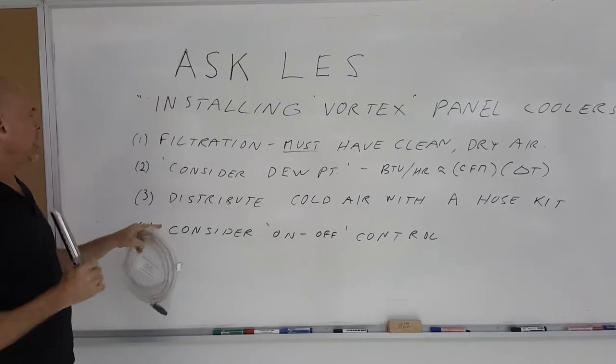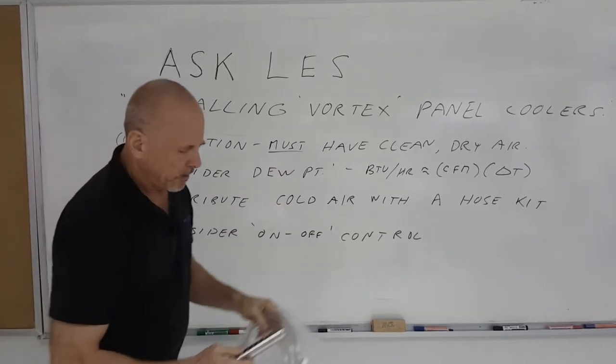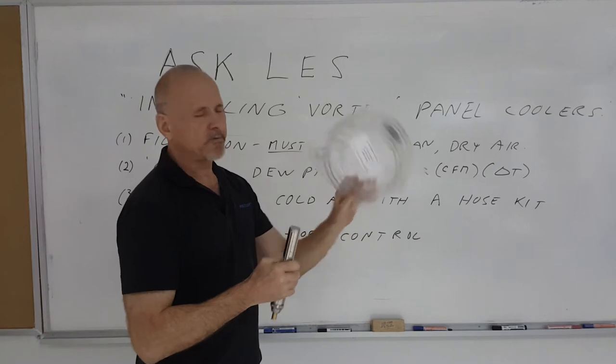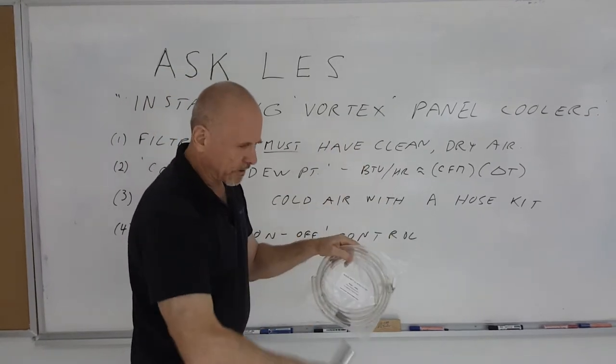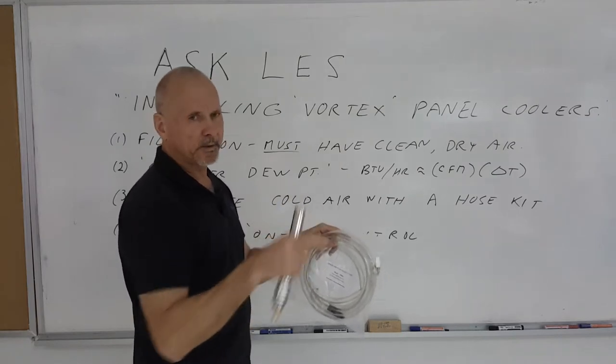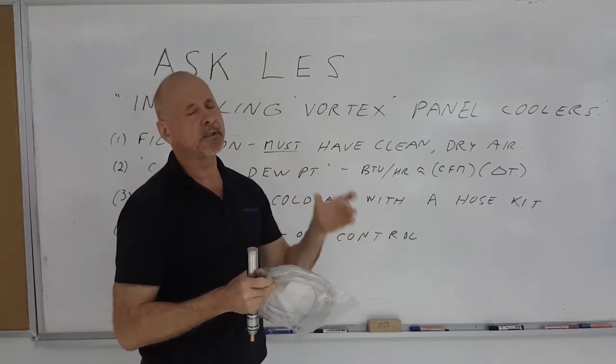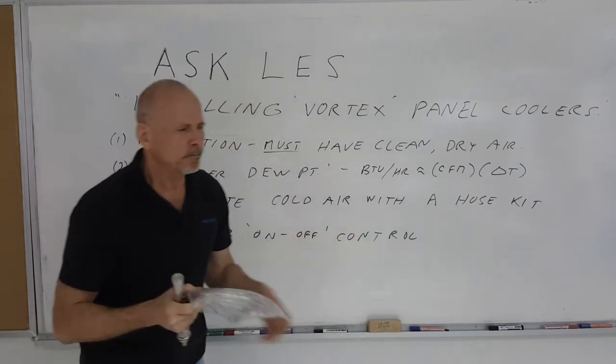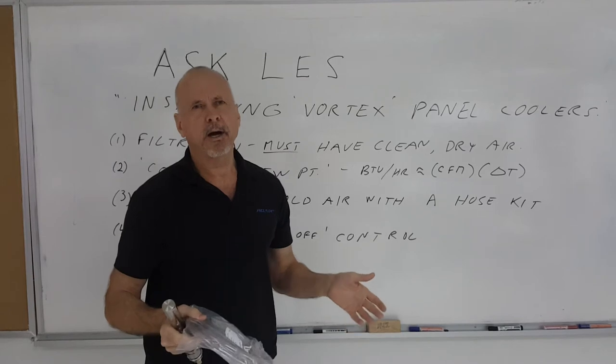The third thing is you want to distribute the cold air with a hose kit. A hose kit like the one I have in my hand simply attaches to the bottom of the unit. You run the hose throughout the control panel, punch holes into it, and have that cold air blow onto the hot spots inside the control panel. It'll just cool faster that way.